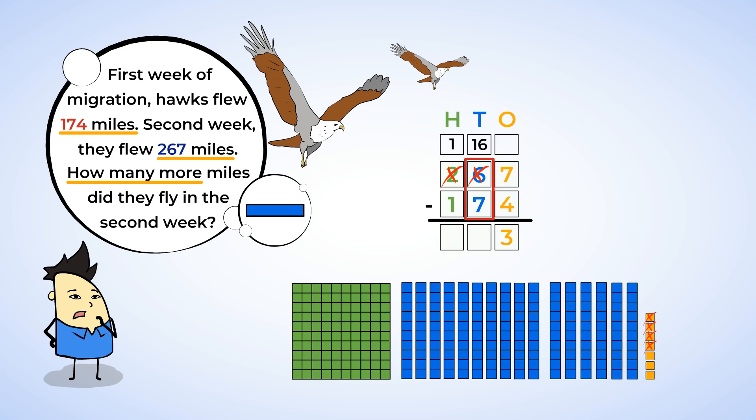Now we have 16 tens. Enough to subtract 7 tens. So, 16 minus 7 is 9. There is 100 plate left, and we need to subtract 1. That leaves us with no hundreds plates. Since that is the last digit we're subtracting, we don't need to use 0 the hero. We don't write anything in the hundreds place.